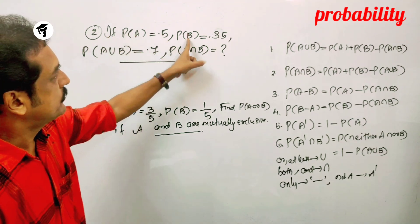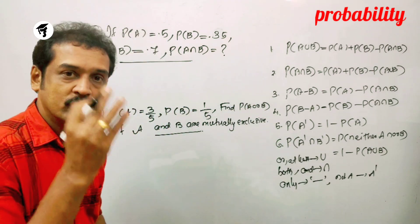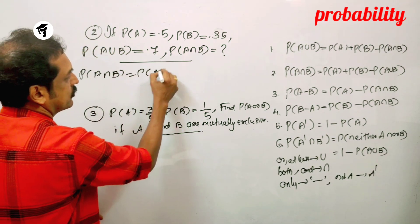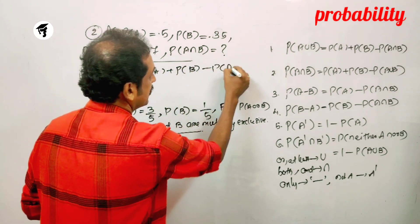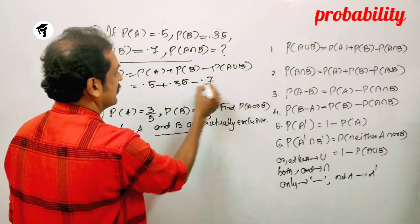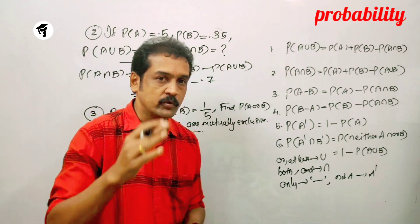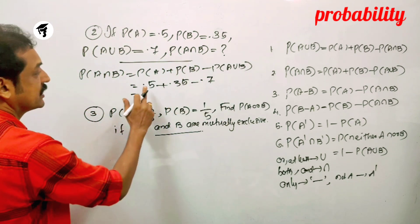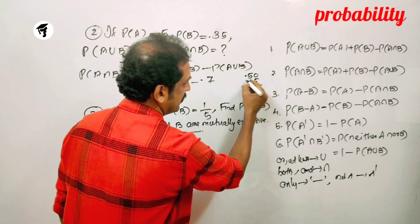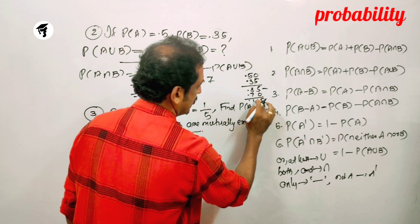Next question: If P of A is 0.5, P of B is 0.35, and P of A union B is 0.7, find P of A intersection B. Using the formula: P of A intersection B equals P of A plus P of B minus P of A union B. That is 0.50 plus 0.35 minus 0.70, which equals 0.85 minus 0.70, giving the answer 0.15.